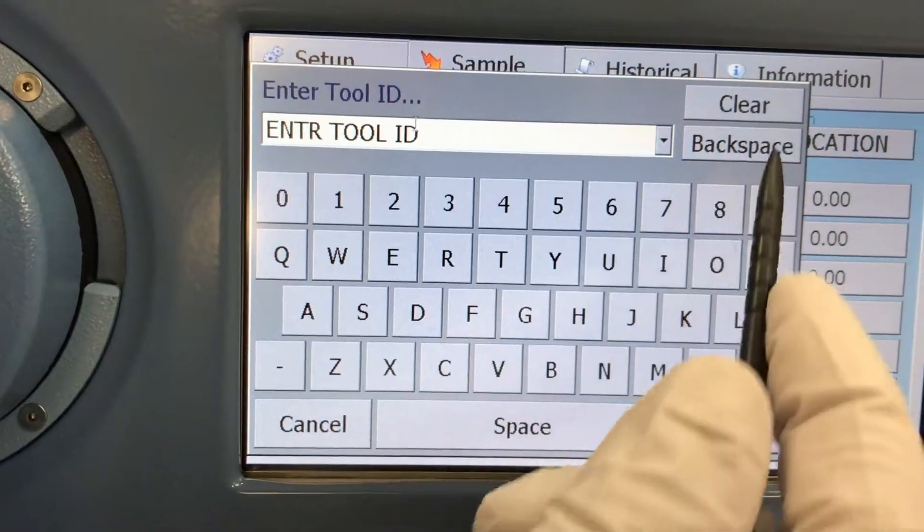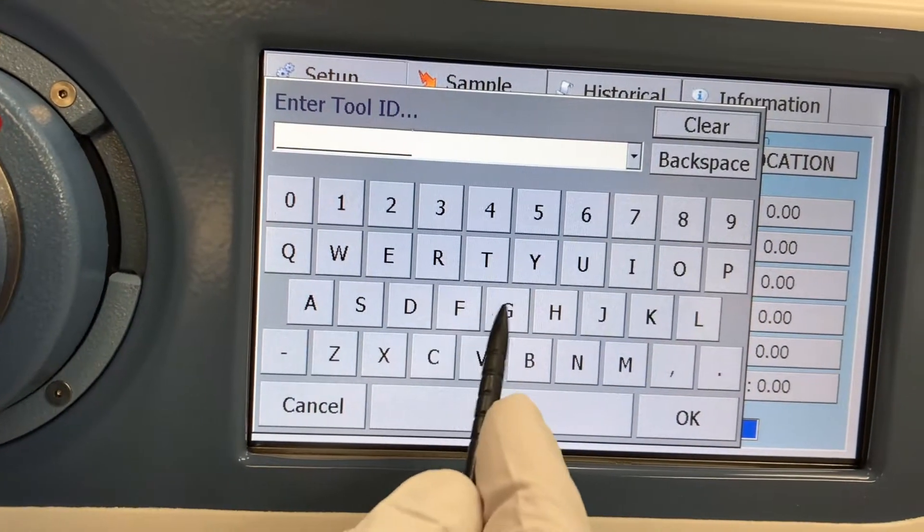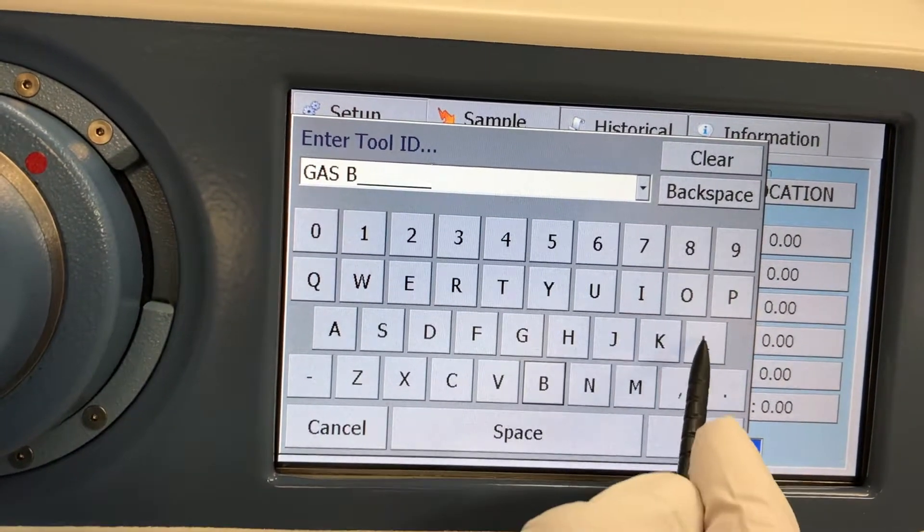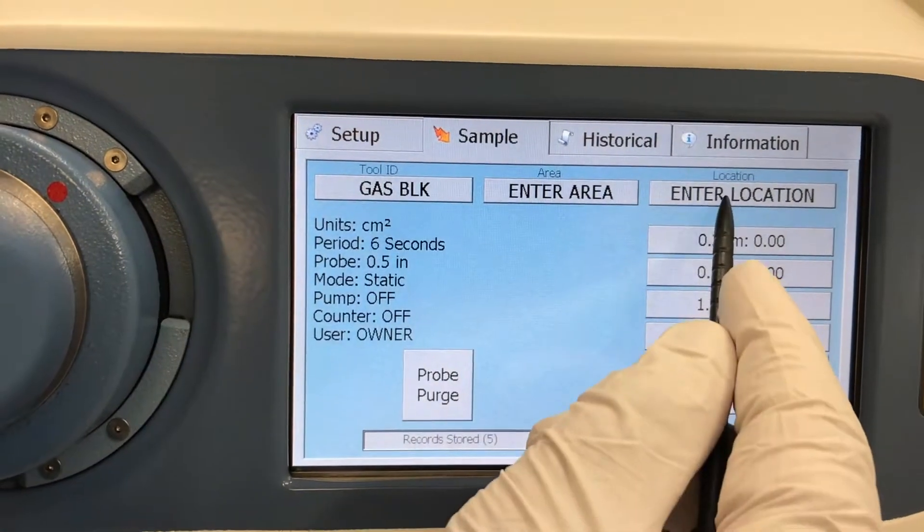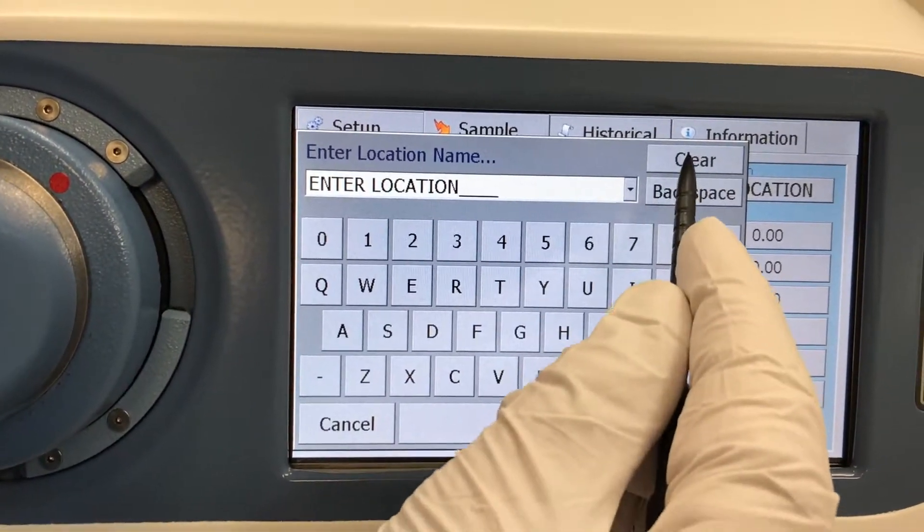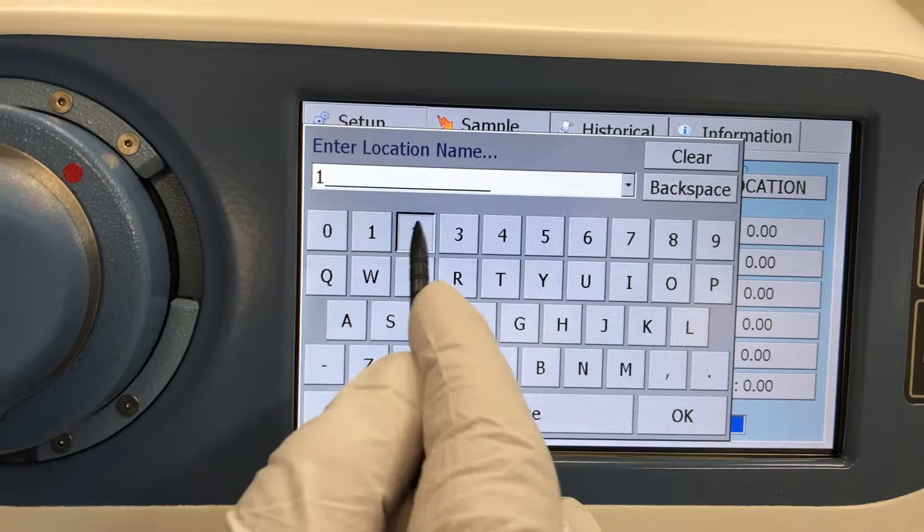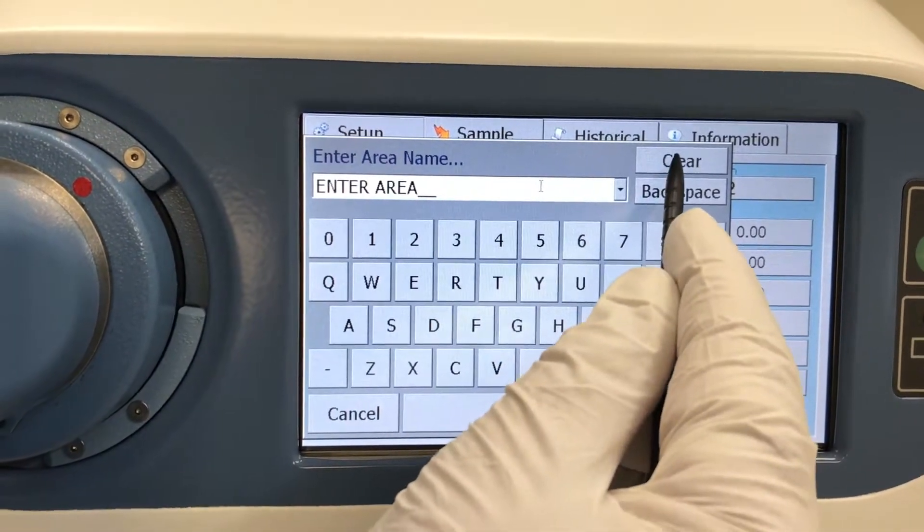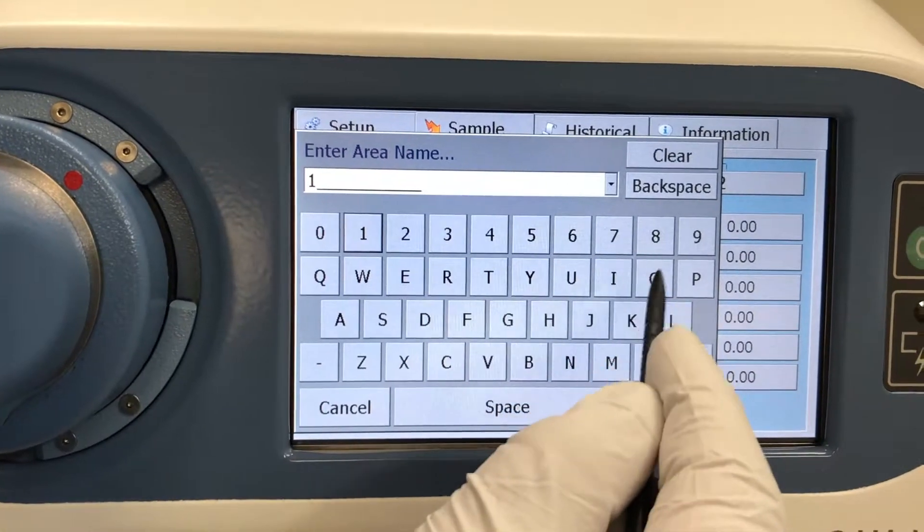Before testing you can enter information about what you are going to test. In this case we entered the part name, the date, and 12 for the 12 o'clock position on the part. You can also attach a barcode reader to the Q3 to enter serial numbers into these fields.